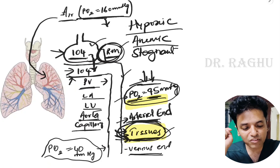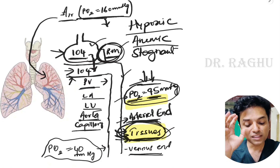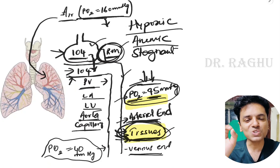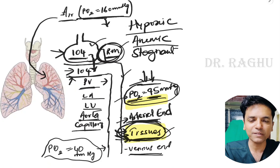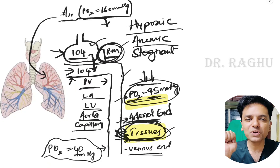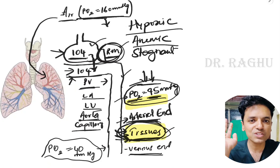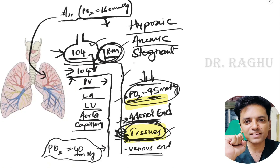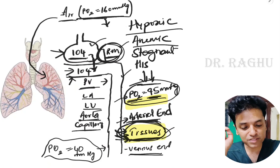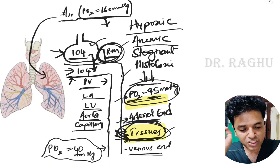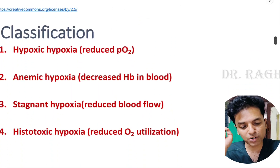The last type occurs when something is wrong with the tissues themselves — the tissues are unable to utilize or extract oxygen. Here everything else is normal: arterial pO2 is normal, hemoglobin is normal, blood flow is normal, but tissues cannot extract oxygen from the blood. This is called histotoxic hypoxia.